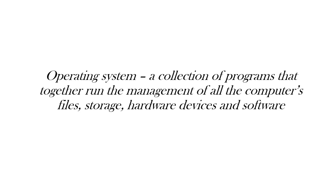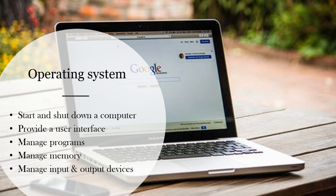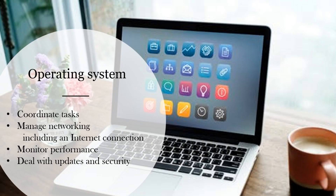What do operating systems do? An operating system is a collection of programs that together manage all of a computer's files, storage, hardware devices, and software. This includes starting and shutting down a computer, providing the user interface, and managing programs. We often want to use more than one program at a time, so the operating system helps with multitasking. It manages memory, all input and output devices, coordinates tasks, manages networking such as your internet connection, and monitors the computer's performance, including dealing with updates and security.